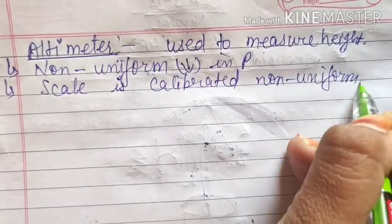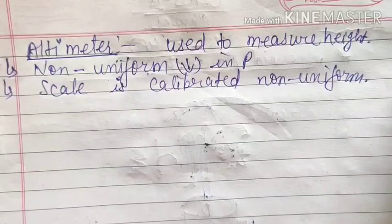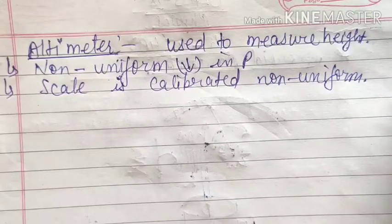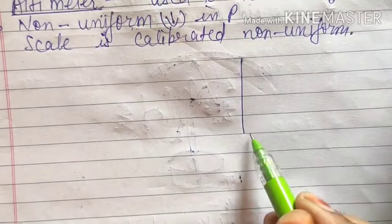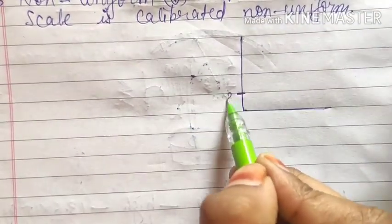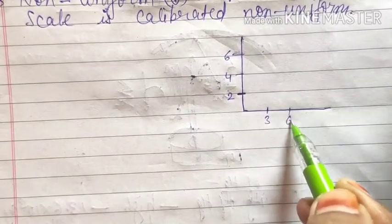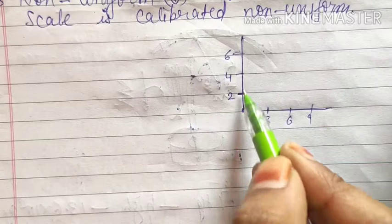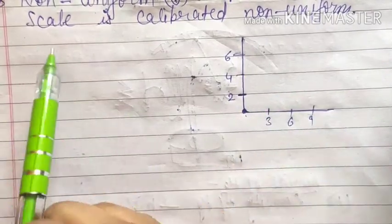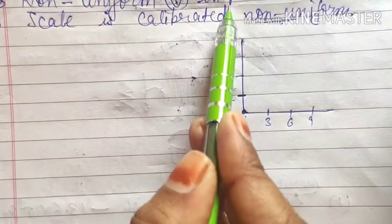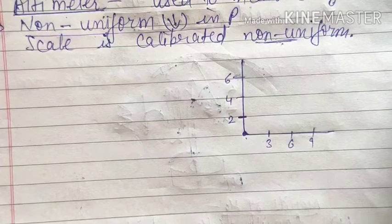In your book this may be confusing because the word 'non-uniform' is not written explicitly. When you plot a graph in maths or physics, you always take a constant gap between boxes on the graph paper — that is a uniformly calibrated scale. But in the case of the altimeter, the scale is not uniform; it is non-uniform, because there is non-uniform decrease in pressure with height. This is the key difference of the altimeter.